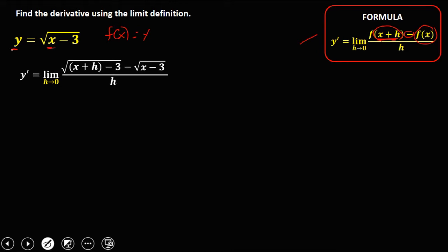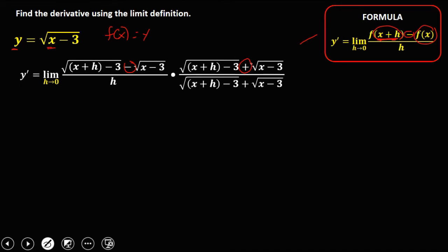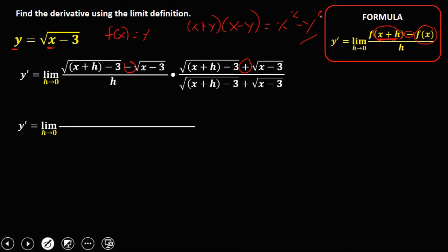To simplify this equation, we need to find the conjugate of the numerator and multiply both sides by it. Since the sign is minus or negative, the conjugate uses plus or positive, multiplied to both sides. Now in multiplying the conjugate, we use the pattern x plus y times x minus y — the shortcut is the square of the first term minus the square of the second term.